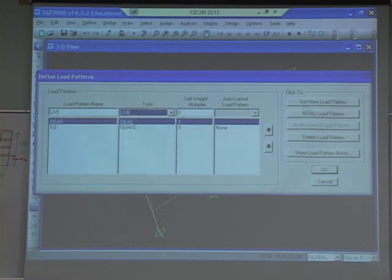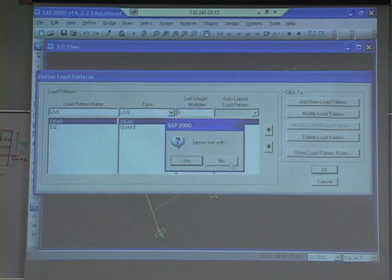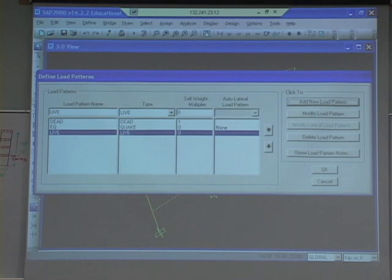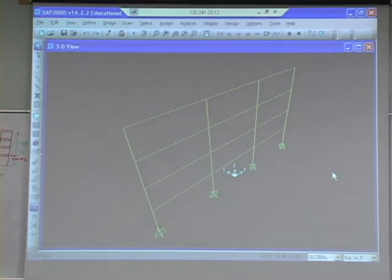Live, self point multiplier, zero. Add new. This is always weird because you have to push it, and you don't push okay. You have to push this to actually add it to the list before you push okay. I always forget that. Okay, so we added a live also. So now when we put loads on it, we can call the loads dead. We can call the loads live, whatever.